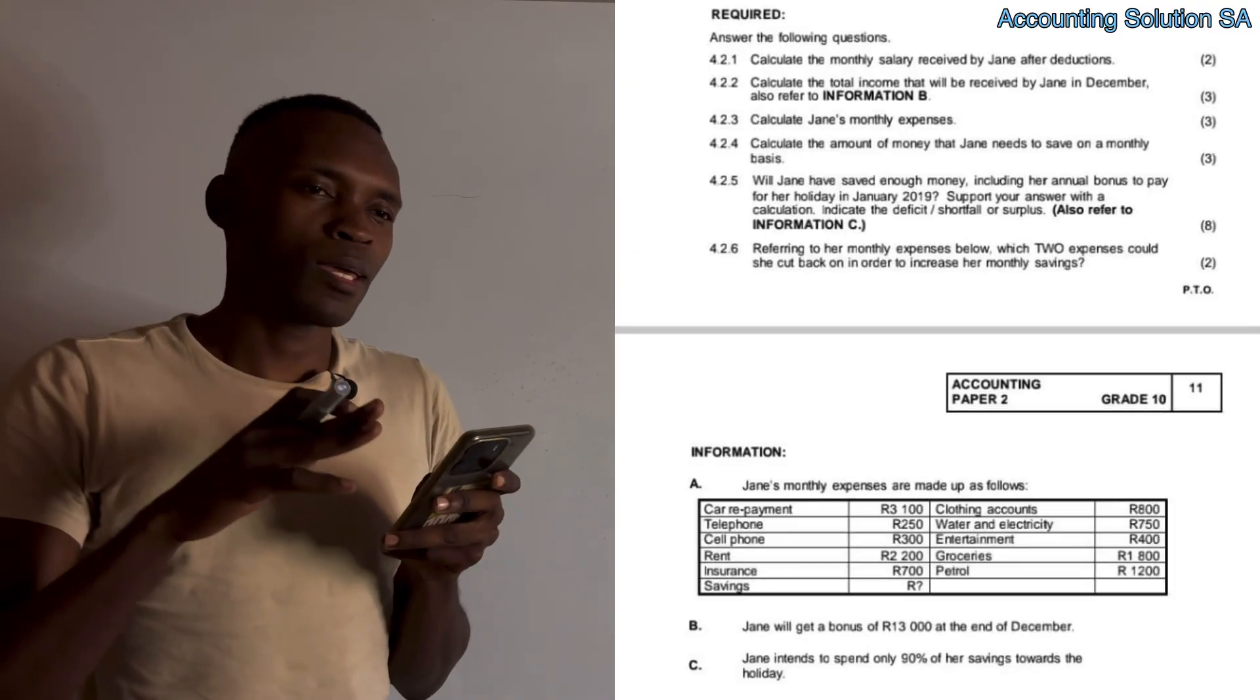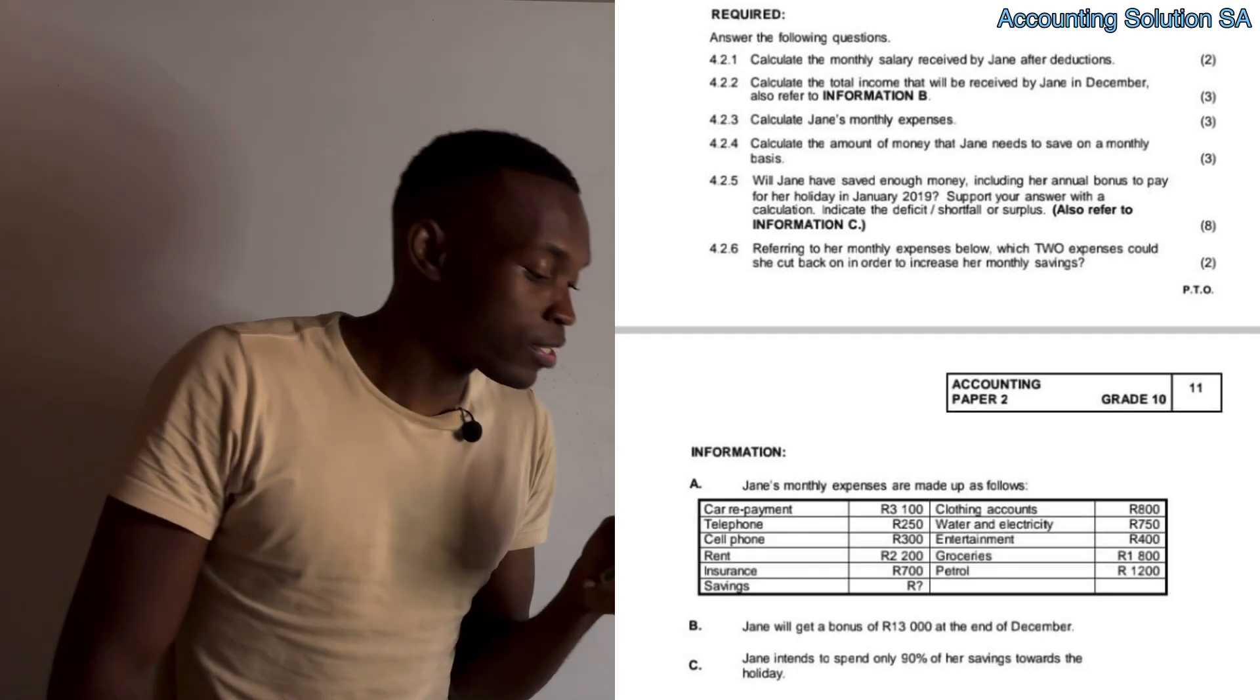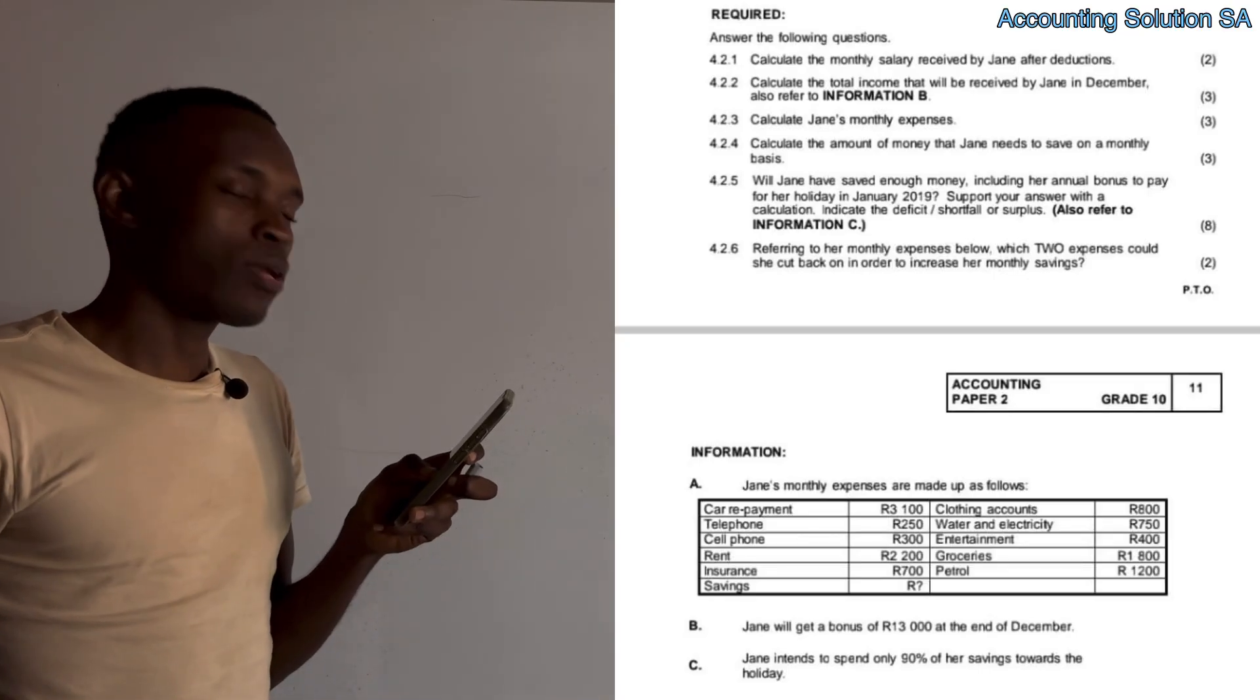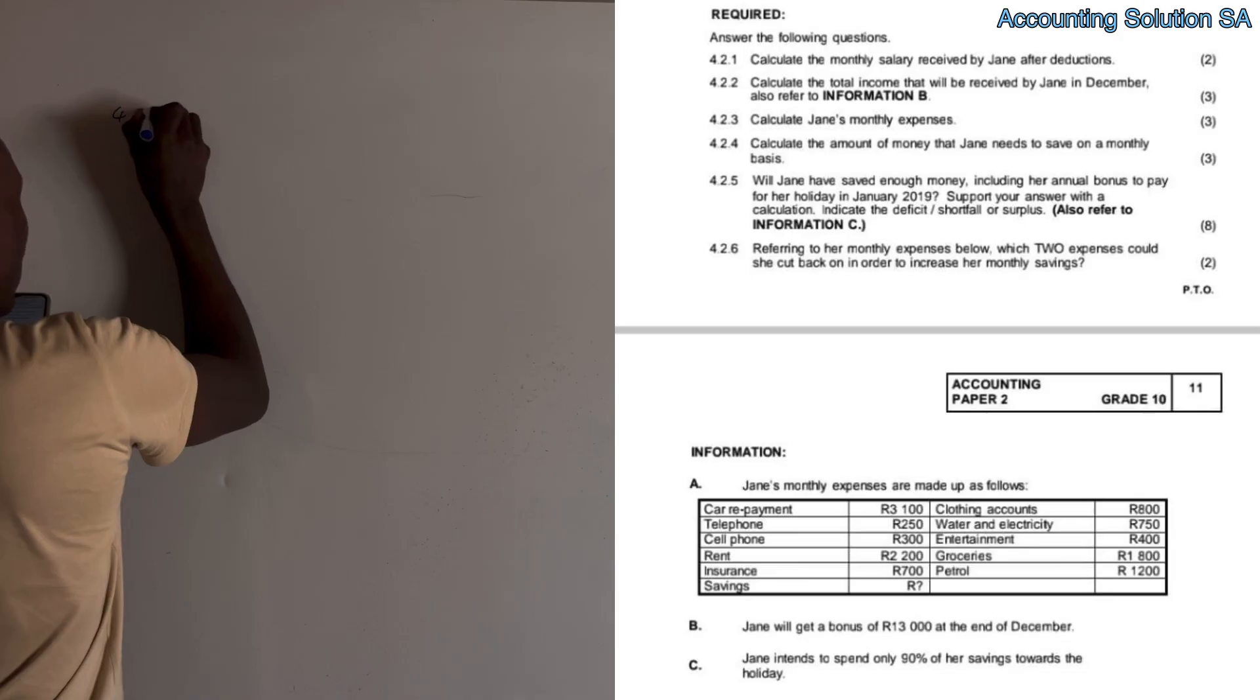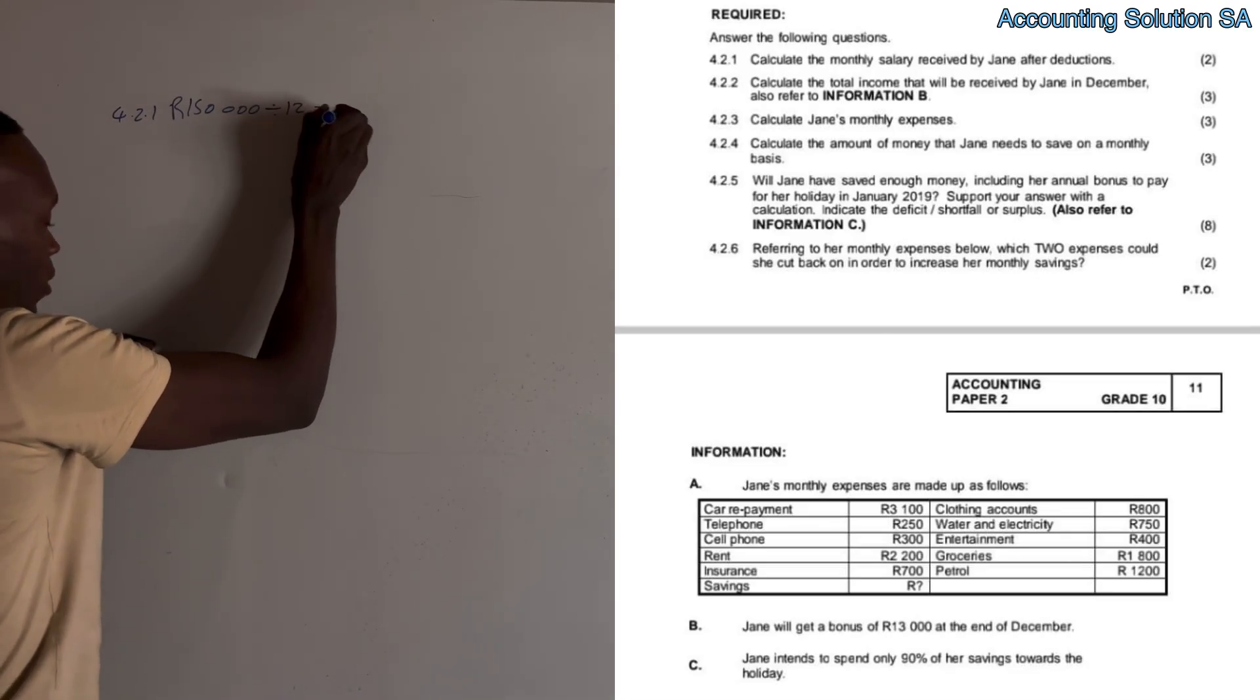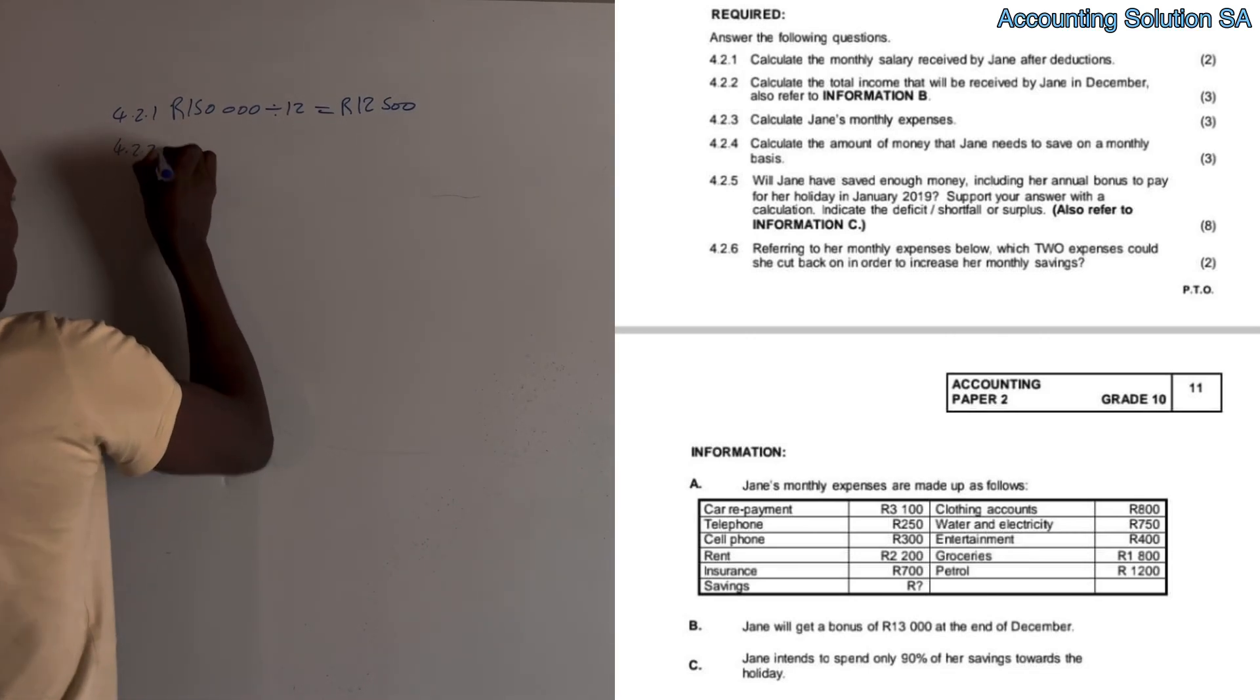Let's go to the question and see if she's going to manage. Question 4.2.1: Calculate the monthly salary received by Jane after deductions. We already have the annual amount after deductions of R150,000. Annual is for the whole year, so to get monthly we must divide by 12, which gives us R12,500. Very simple.